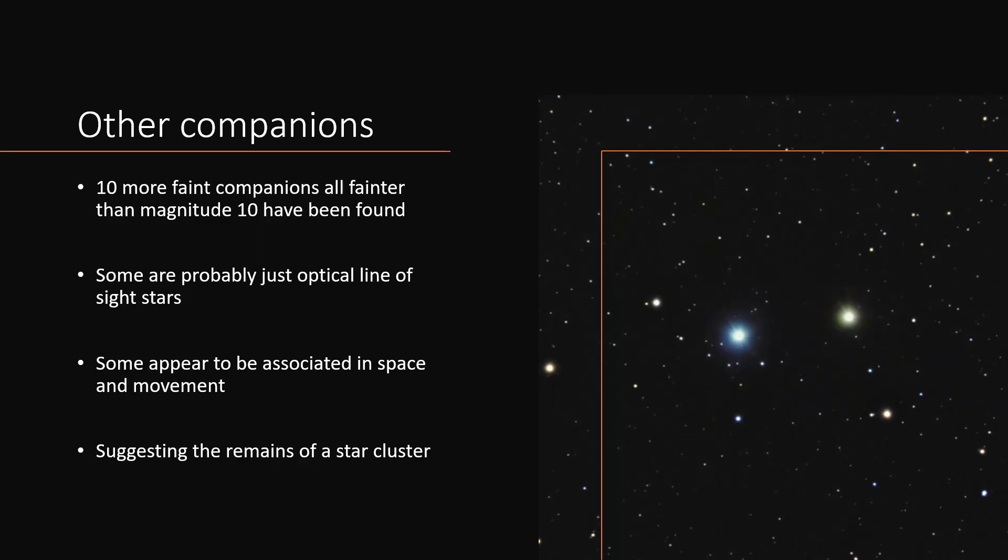So the whole group is coming towards the solar system, and this suggests that this is the remains of a 100 million-year-old star cluster, in fact, and that all of these were born together. So it seems to solve the origin and the evolution of all of these fascinating stars of the Albireo co-moving group.